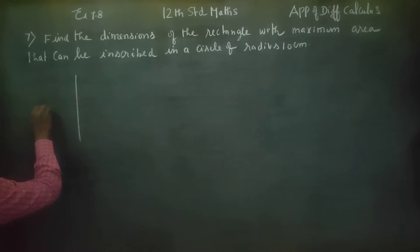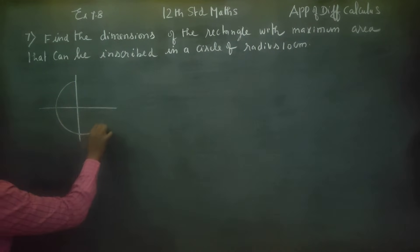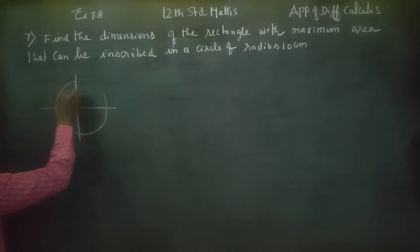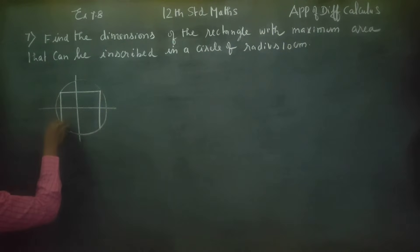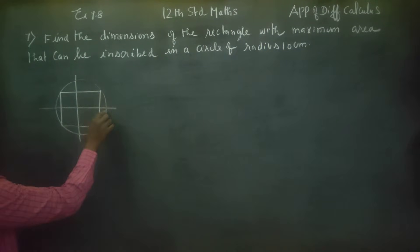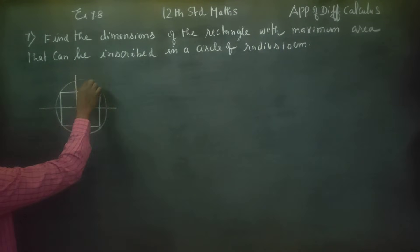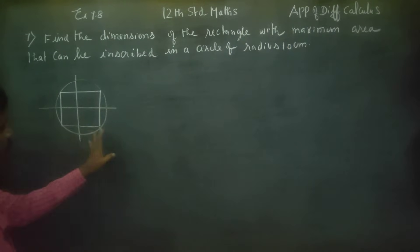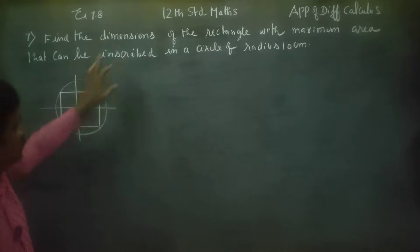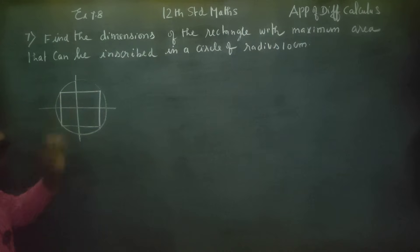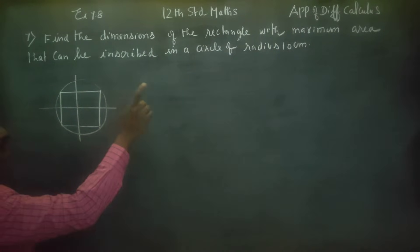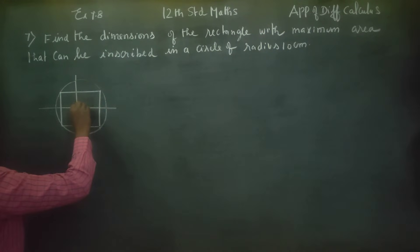There is a circle, and inside the circle one rectangle is inscribed. We need to find the rectangle with the smallest — rather, the maximum — area inscribed in the circle. We choose a point on the circle, and this gives us a length and breadth. The radius of the circle is 10.